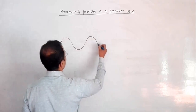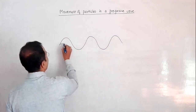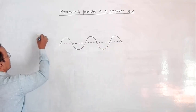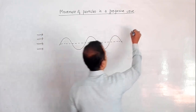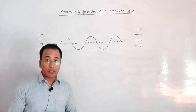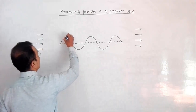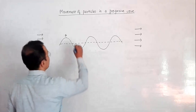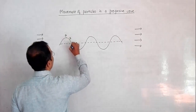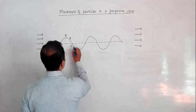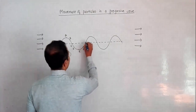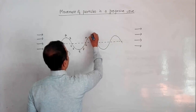So this is the wave that we have, and this is the midpoint. Let me assume that the energy is going to this side — this is the direction of energy. Now let us discuss the movement of particles. This particle A is at the top, particle B is somewhere in the middle, and C is at the bottom. Similarly, I have particle D here, particle E at the lowest point, and then particles F, G, H, and I.